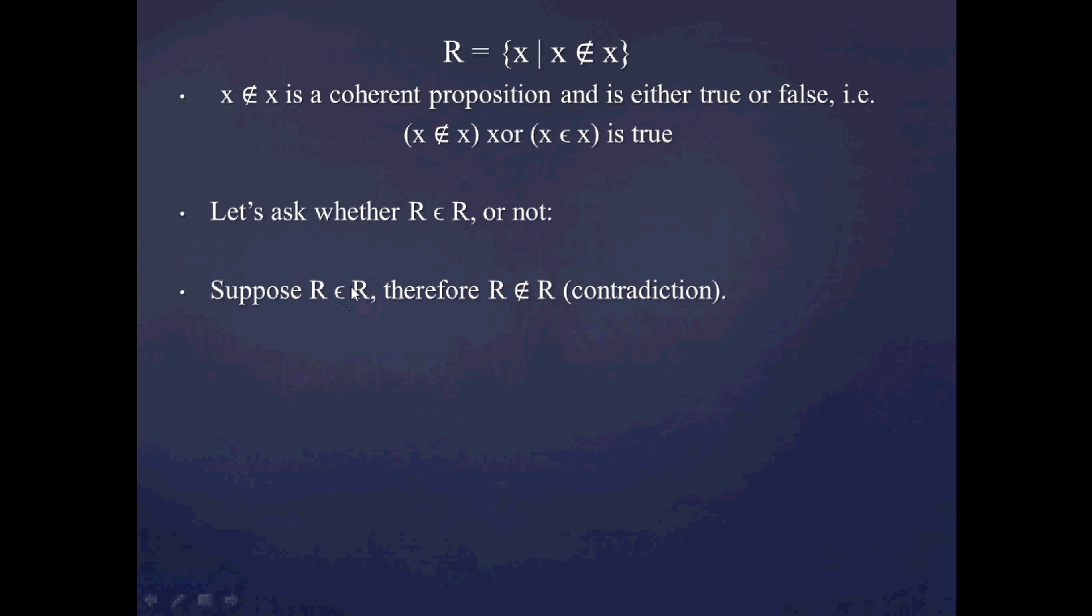And since R is an R has to be false, we have to conclude that R is not an R. But now, if R is not in the set R, then I'm forced to include R within the set R. And again, this leads to a contradiction.